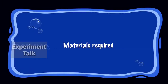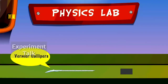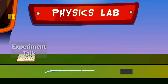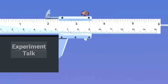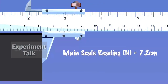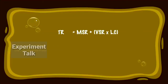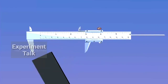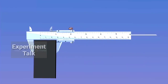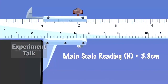Rectangular Block. Materials Required: Vernier Calipers and a Rectangular Block. Place the rectangular block length-wise in between the outer measuring jaws of the Vernier Calipers and note its MSR and VSR readings. Calculation: TR is equal to MSR plus VSR into least count, that is equal to 7.2 plus 4 into 0.01, which is equal to 7.24 cm. Now place the rectangular block breadth-wise in between the outer measuring jaws and note the MSR and VSR reading.